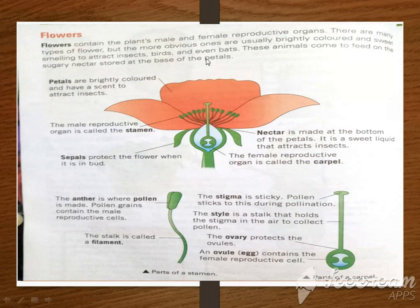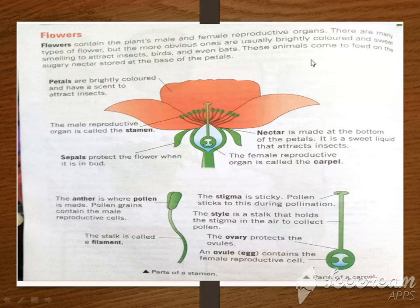The flower contains both male and female reproductive organs. There are many types of flowers, but the more obvious ones are usually brightly colored and sweet-smelling to attract insects, birds, and even bats. These animals come to feed on the sugary nectar stored at the base of the plants. You can see different insects visiting the flowers to feed on the juice contents.